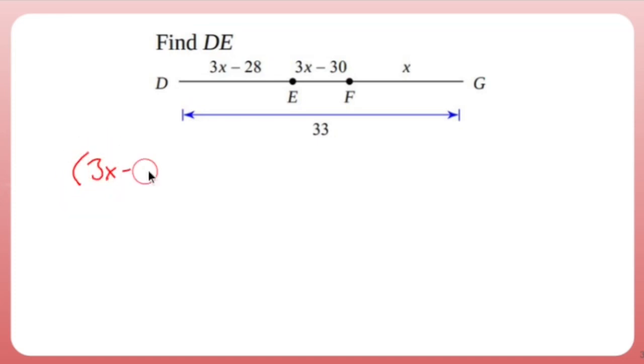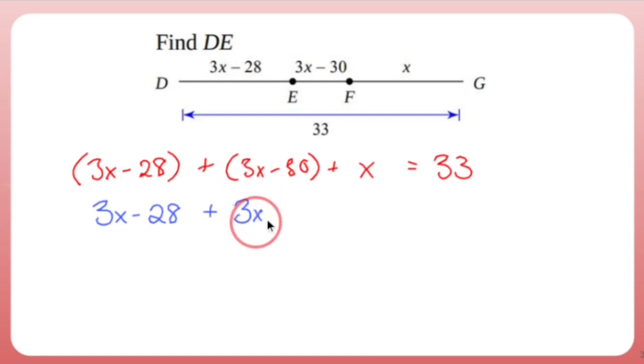Let's write 3x minus 28 plus EF is 3x minus 30 plus FG, which is just x, and all of that equals 33. If you have nothing in front of a parentheses, you don't need the parentheses. So this leaves me with 3x minus 28 plus 3x minus 30 plus x equals 33.